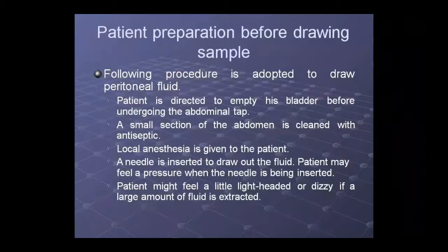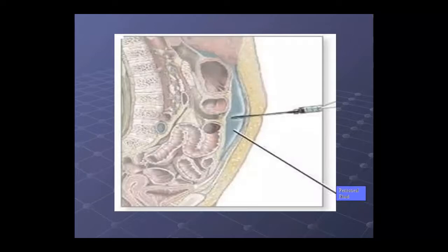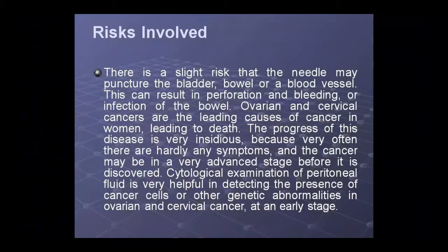Before taking a sample, you will prepare the patient. The procedure involves having the patient empty their bladder, then performing an abdominal tap. A small section of the abdomen is cleaned with antiseptic, local anesthesia is applied, the needle is inserted, and fluid is drawn. The patient may feel a little pressure when the needle is inserted, and some dizziness if large amounts of fluid are extracted. Risks include puncture of the bladder, bowel, or blood vessel, as well as pain, bleeding, or bowel infection.